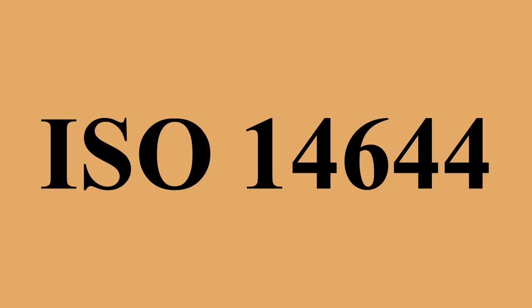Part 5 — Operations — provides the basic requirements for operating and maintaining clean rooms and associated controlled environments. This standard addresses requirements basic to the operation of all clean rooms regardless of application. Topics include operational systems that must be in place, selection and use of appropriate clean room garments, training and monitoring of personnel and activities, installation and use of equipment, requirements for materials used in the clean room, and maintaining the clean room environment in a clean, usable condition conforming to design standards. This part was published as an international standard in 2004 and adopted as ANSI/IEST ISO 14644-5-2004 in the United States.